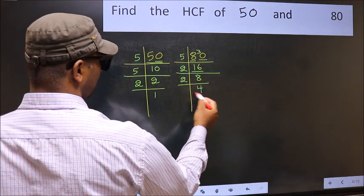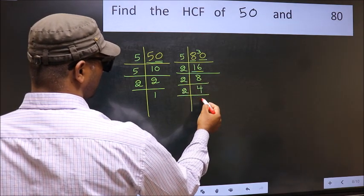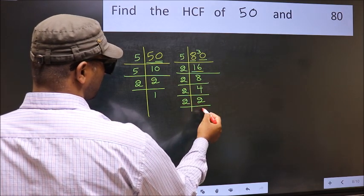8 is 2 times 4 is 8. 4 is 2 times 2 is 4. Now 2 is a prime number so 2 times 1 is 2.